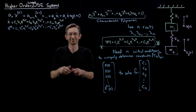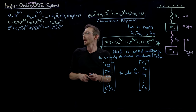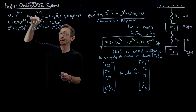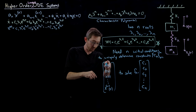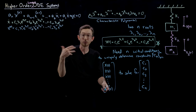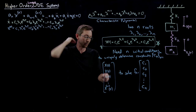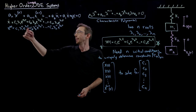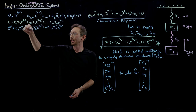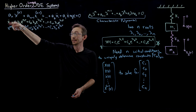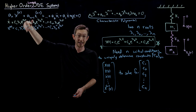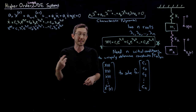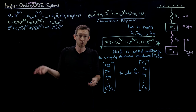And importantly, if I plug in time zero — because all of this is initial data, initial just means at time zero — all of these exponentials become one, since e to the zero is one. So this is really nice.